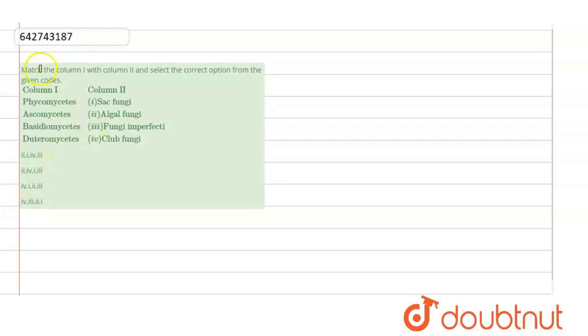The question here says match column one with column two and select the correct option from the given codes. Column one lists phycomycetes, ascomycetes, basidiomycetes, deuteromycetes. Column two says sac fungi, algal fungi, fungi imperfecti, and club fungi. We will be discussing each of the column end points.